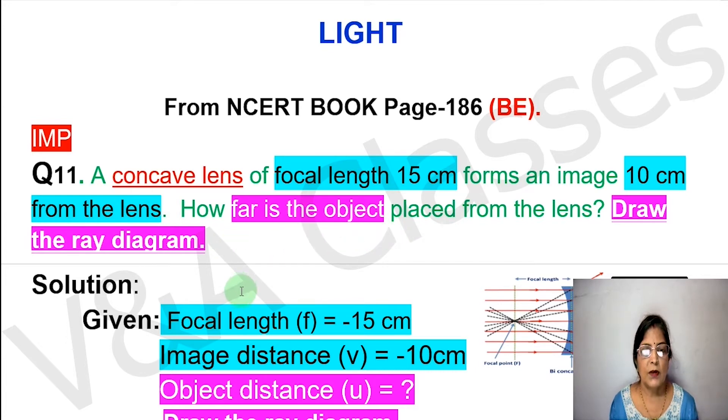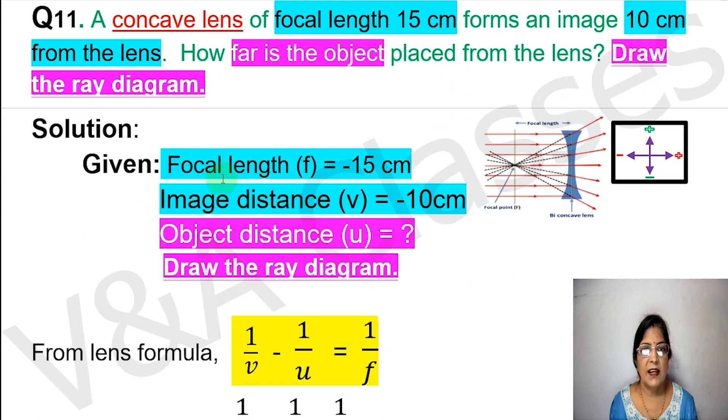We will start with the given values. First, given is focal length f equals to minus 15 centimeter. The question gives 15 centimeter but we write minus 15 centimeter. This is because the concave lens has its focus on the left side, and if the focus is on the left side then the focal length value will have a minus sign.